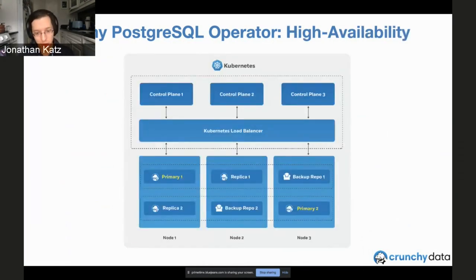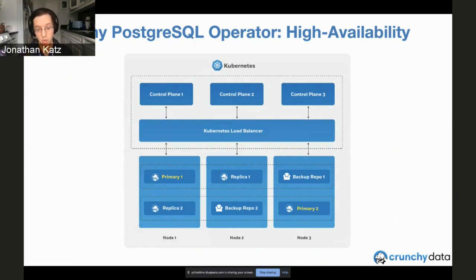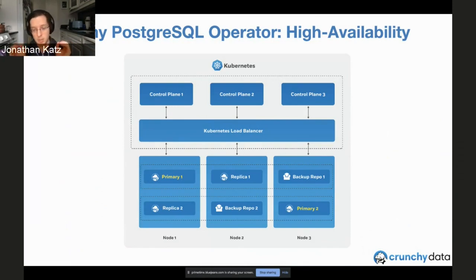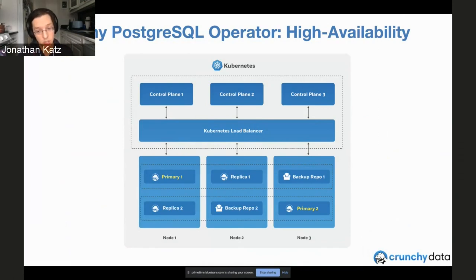The high availability architecture is one of my favorite parts. The CrunchyPostgres operator is designed to be as good as your Kubernetes high availability. Distributed consensus is handled using the Kubernetes-backed DCS — distributed consensus store — to determine the health of Postgres clusters, which ones are up, and whether one is unavailable due to a network split or other downtime event. Using a distributed consensus protocol, it determines when to fail over and promotes the replica furthest ahead to minimize downtime. You only need a primary and a replica to have a highly available Postgres cluster in Kubernetes.